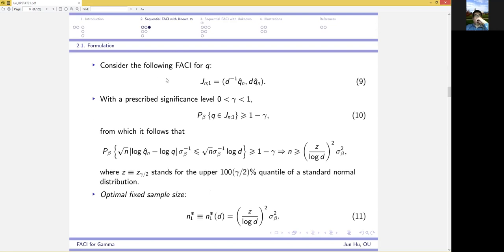Now, consider the fixed accuracy confidence interval for q. It should additionally satisfy the condition that the coverage probability must be at least 1 minus gamma, where gamma is a prescribed significance level. From this condition, we can obtain the minimum sample size needed,